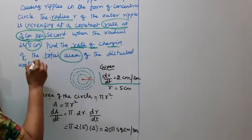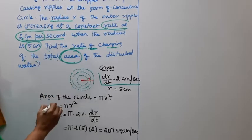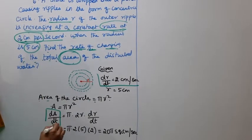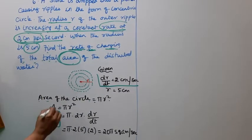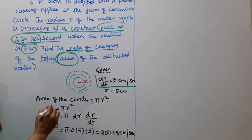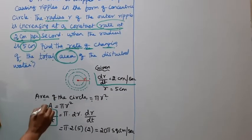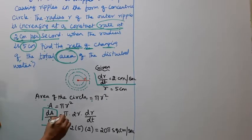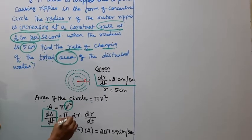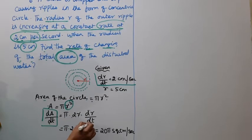The rate of change of the area is dA/dt. Since A = πr², differentiating with respect to t gives dA/dt = π · 2r · dr/dt.